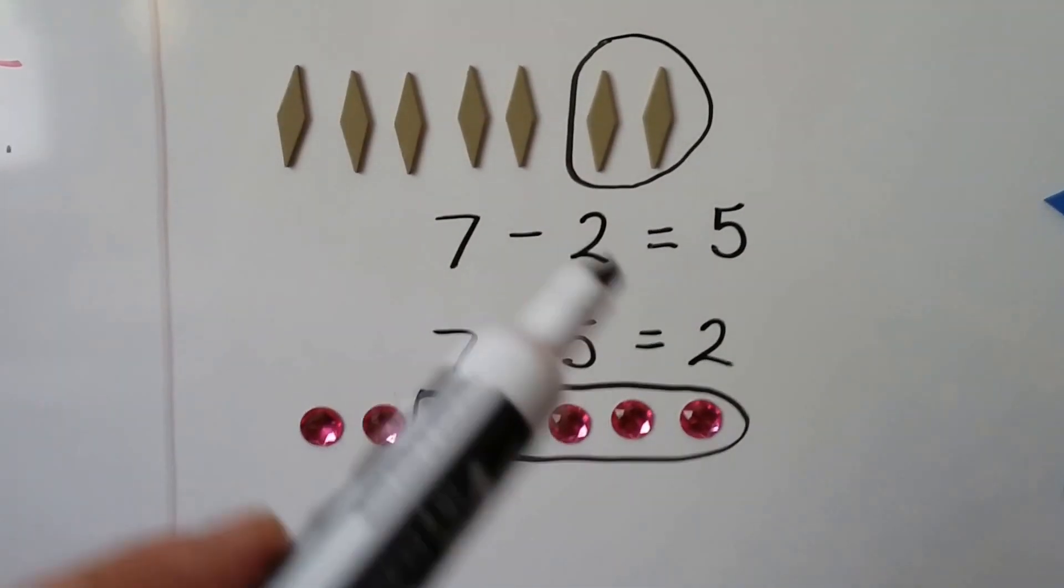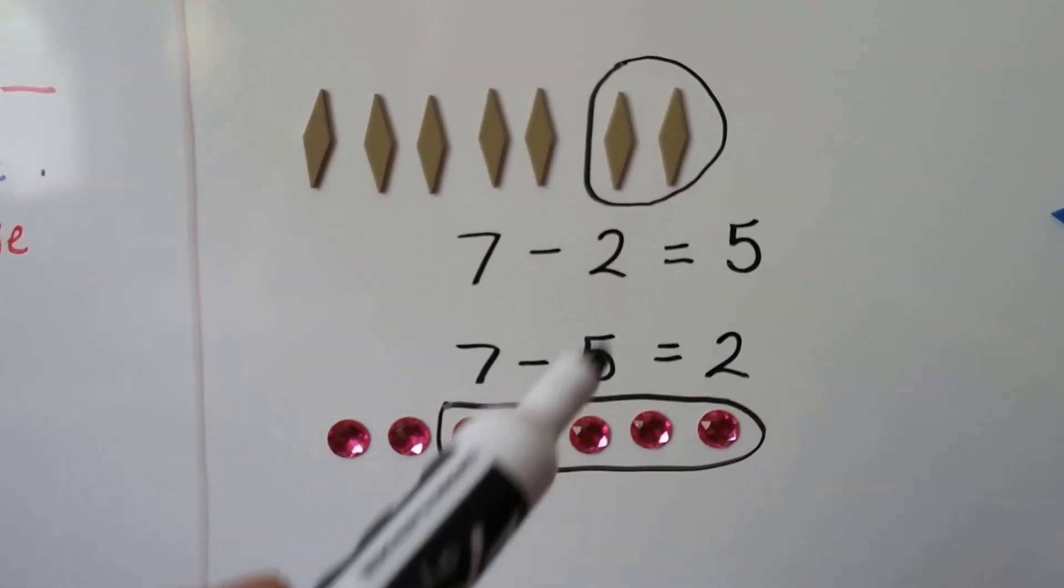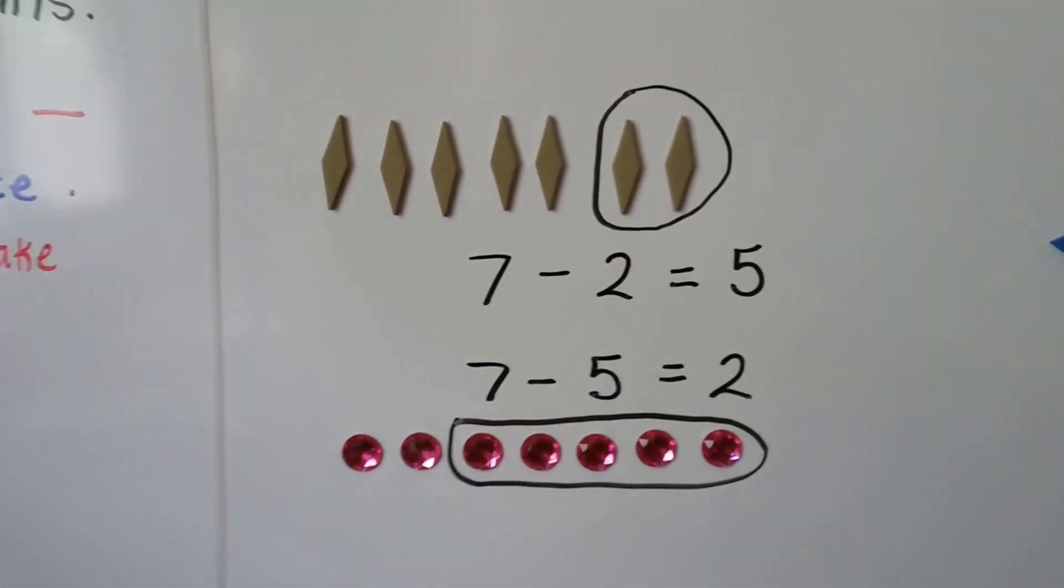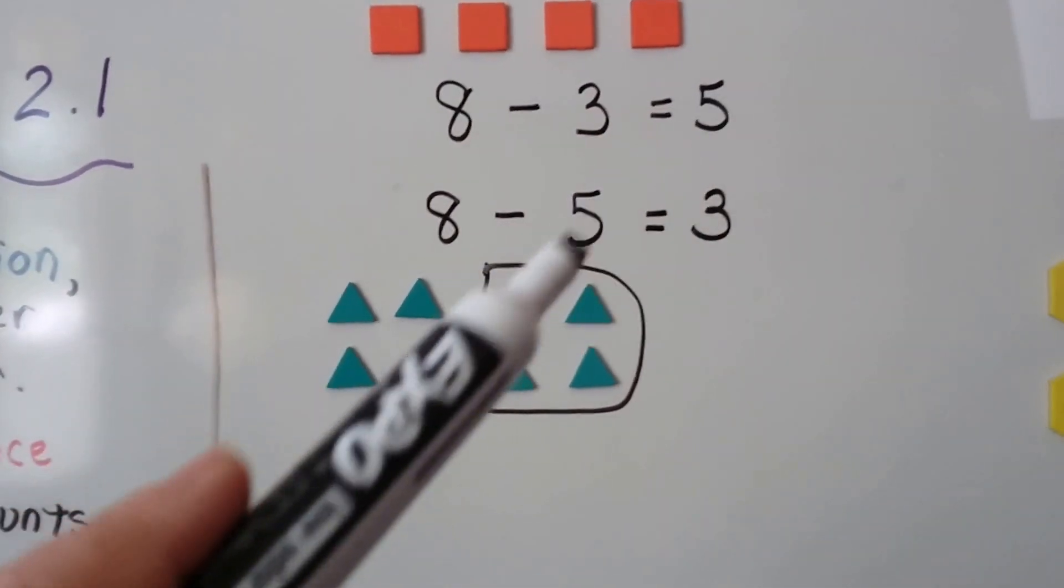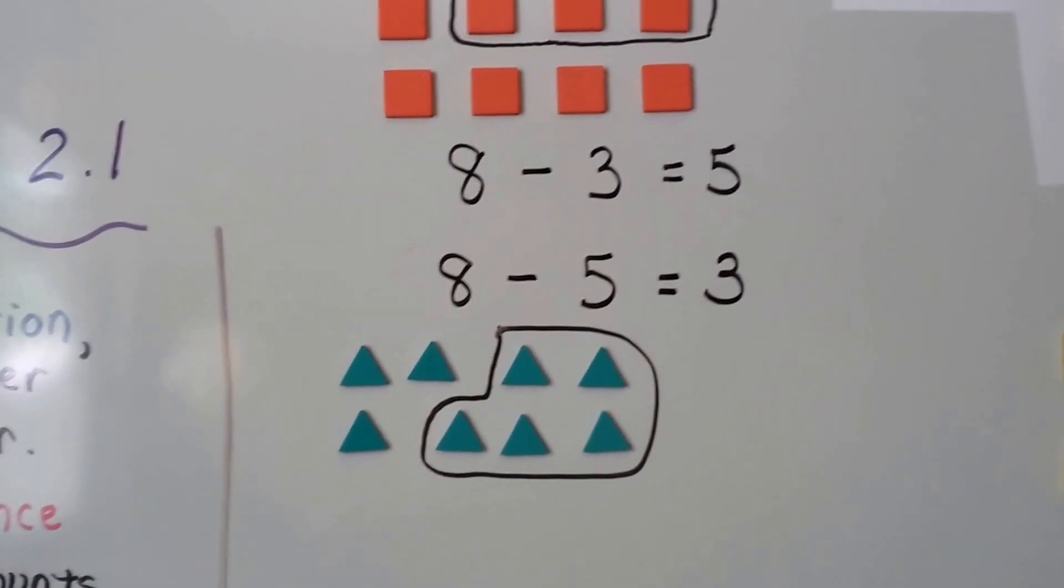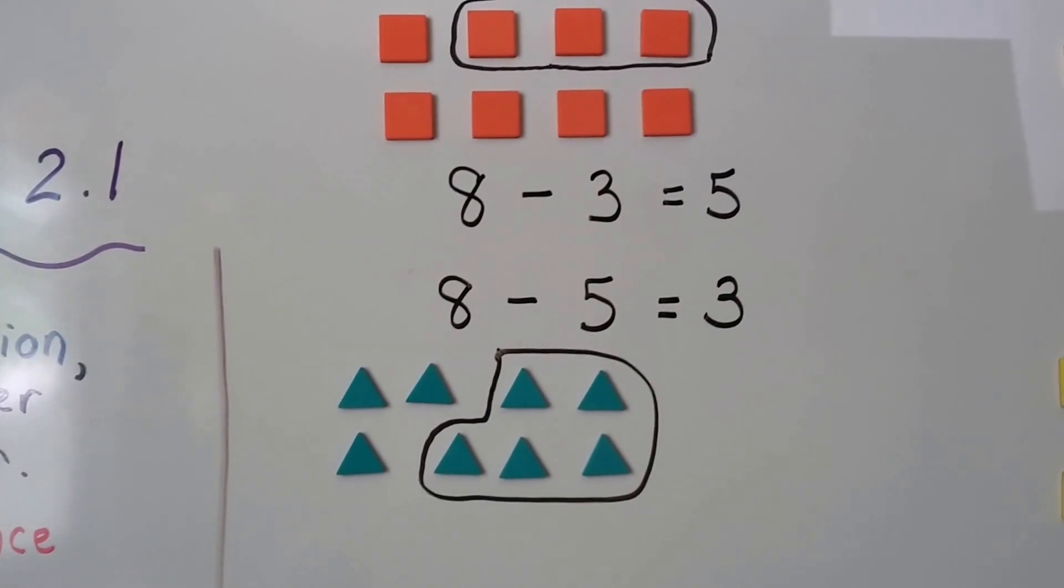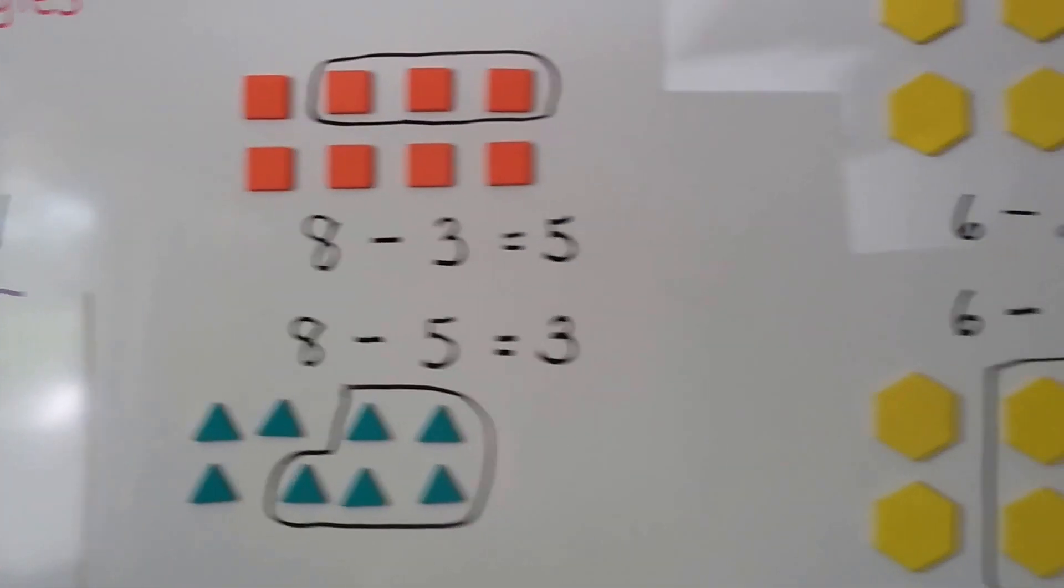Now do you see how it looks like they traded places? It's because they're a fact family. Did you learn about that in first grade, about fact families?